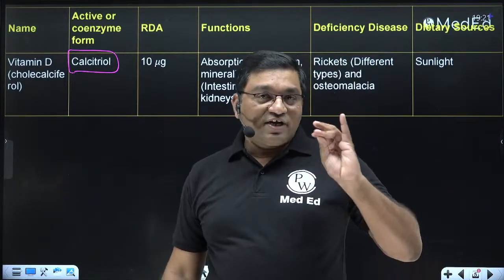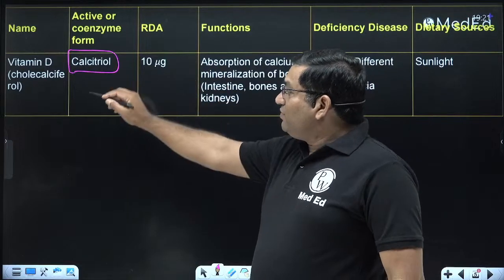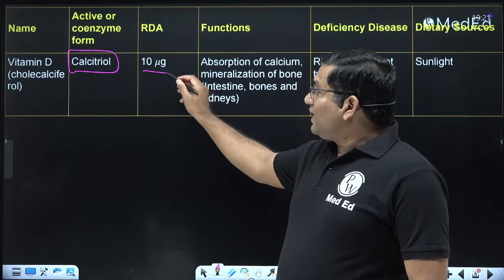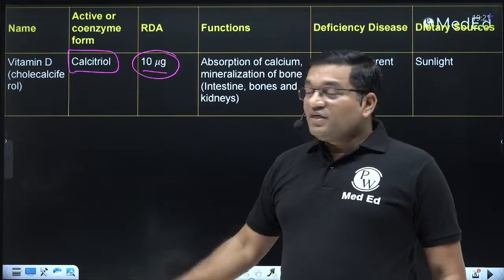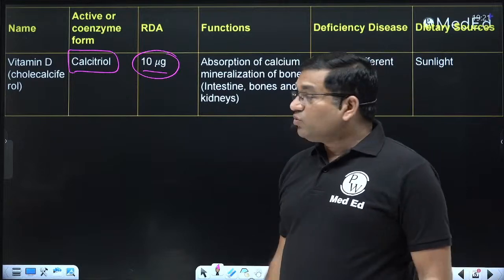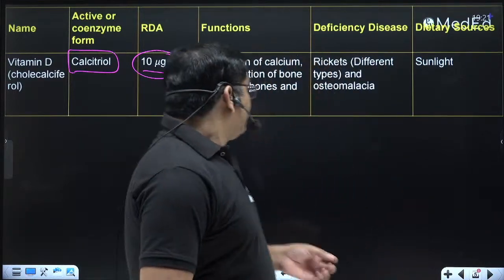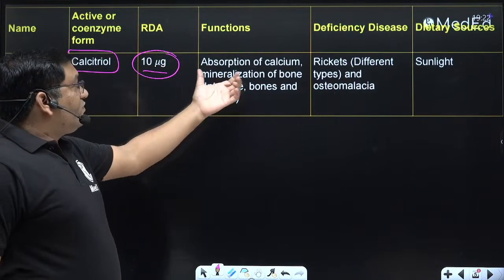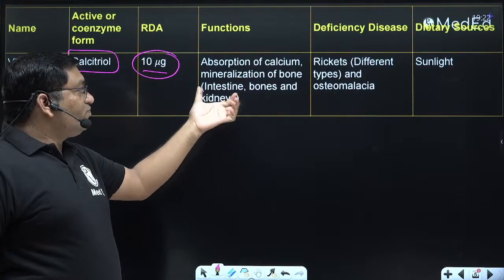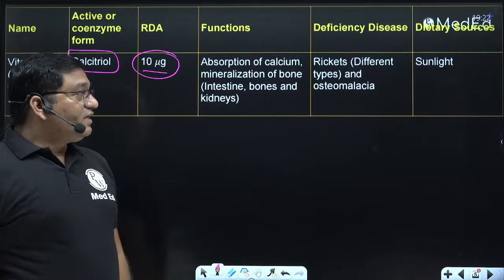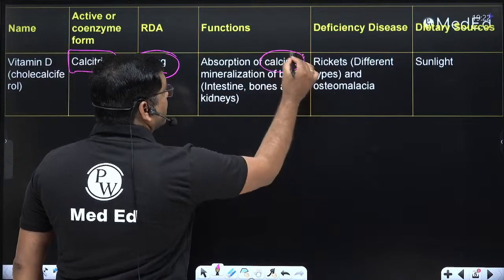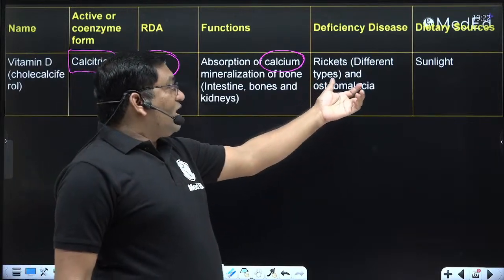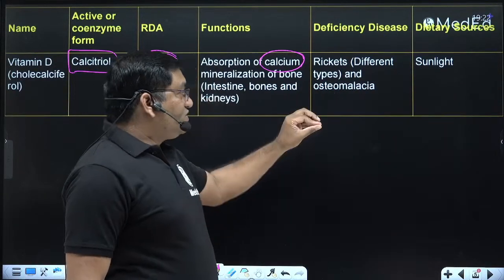The RDA of vitamin D: in children it is 10 micrograms; in adults it is 5 micrograms; in pregnancy and lactation it is 10 micrograms — that is 400 international units. Requirement is more in children, growing age groups, pregnancy, and lactation. Functions of vitamin D: absorption of calcium, mineralization of bone; it acts on intestine, bone, and kidney, regulating calcium and phosphorus. Deficiency in children causes rickets; in adults, osteomalacia.